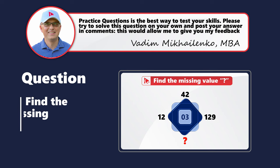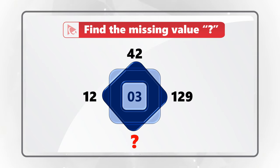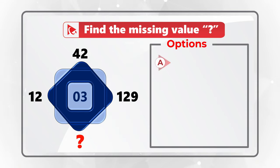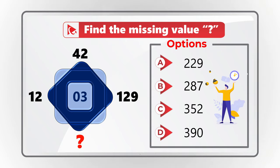Here's a practice question for you to test your skills. I am not going to share the solution — instead, I ask you to solve this challenge on your own and post your answer in comments so I can give you feedback. Take a close look to find the missing value represented by a question mark in a shape containing numbers 12, 42, 129 around it and the number 3 in the middle. Choices: A (229), B (287), C (352), D (390). Once ready, post your answer in comments. Thanks for participating and good luck!